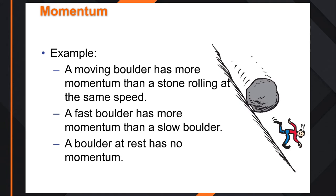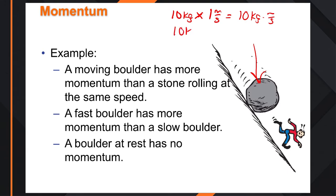If we're describing momentum, say we have a big boulder and it starts rolling — it has momentum. If it's moving faster, say a 10-kilogram boulder moving at 1 meter per second, we'd have 10 kilogram-meters per second. But if that boulder were to double in speed, what happens to its momentum? It doubles as well.